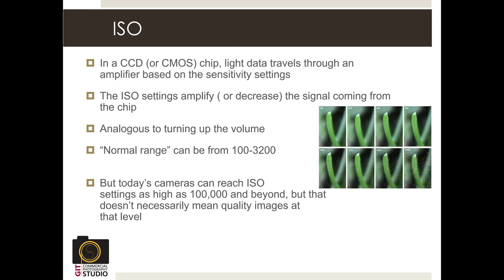Sample images show ISO values at 100, 200, 400, and 800, which are all fairly acceptable on most cameras. But at 1,600, 3,200, 6,400, and 12,800, the noise and grain become obviously problematic. Keep ISO as low as possible. But if you simply don't have enough light using external light sources, shutter speed, and aperture, then ISO is your last resort — you'll need to amplify and boost the signal.